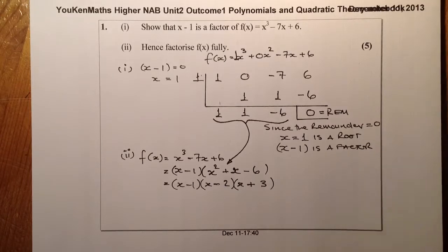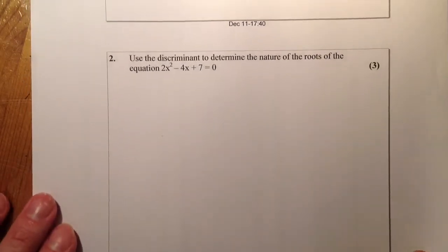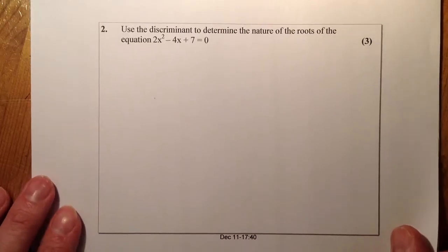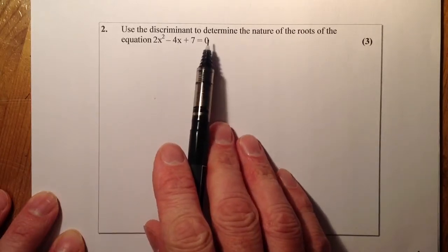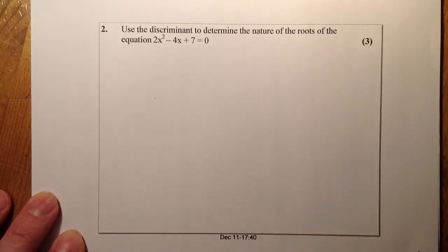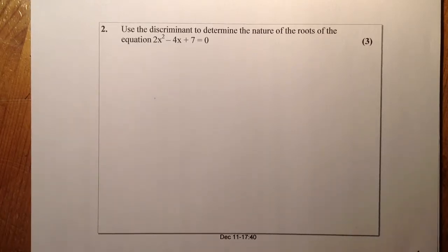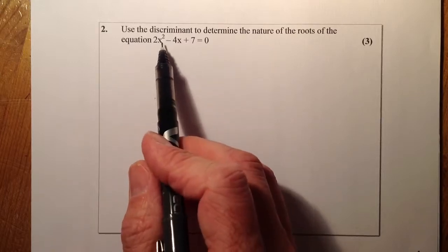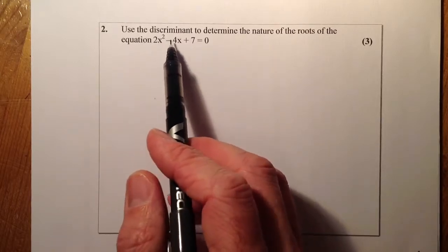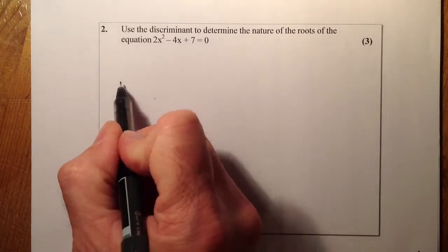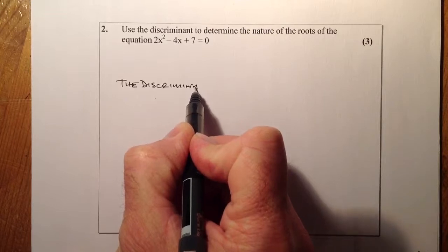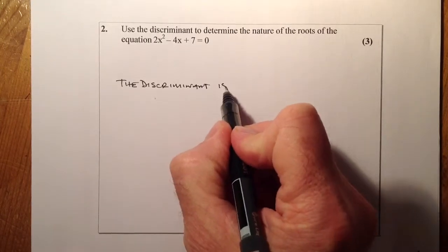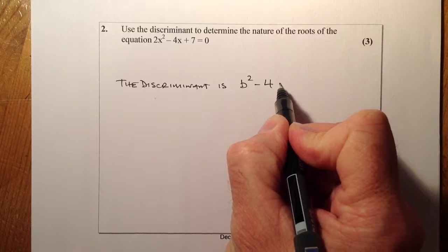Let's move on to question 2. What we've been asked to do is we're going to use the discriminant to determine the nature of the roots of the equation 2x squared minus 4x plus 7. The first thing that I can see from there, from that equation, is if I have to use the discriminant, I know what that looks like. So the discriminant is, remember it's the b squared minus 4ac.